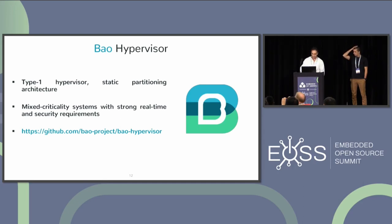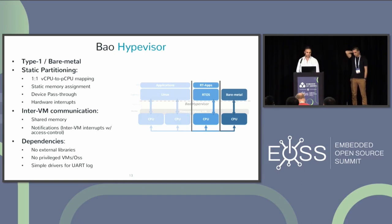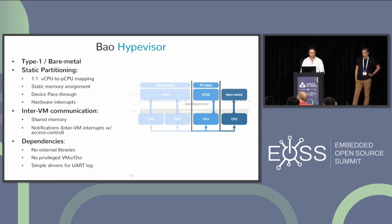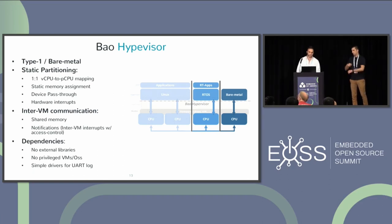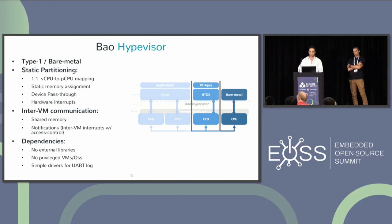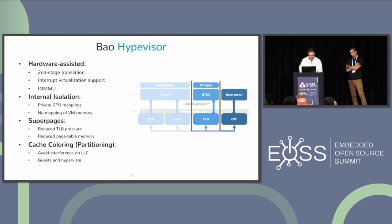BAU is type 1 or bare metal — runs directly atop the hardware — with one-to-one virtual-to-physical CPU mapping, completely static memory assignment, device pass-through, and hardware interrupts. It provides a minimal layer of inter-VM communication based on shared memory and notifications, with no dependencies on any operating system, external libraries, or privileged virtual machines. It relies as much as possible on hardware virtualization support.